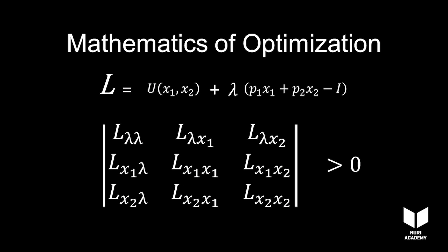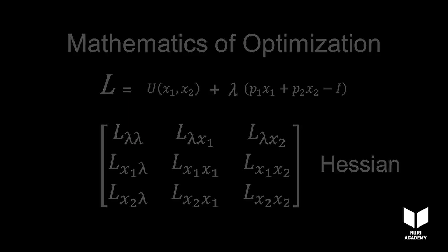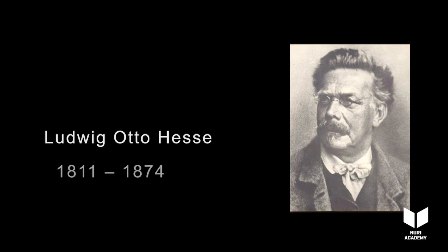Voila! The second-order partial derivatives matrix is called Hessian, after German mathematician Otto Hess.